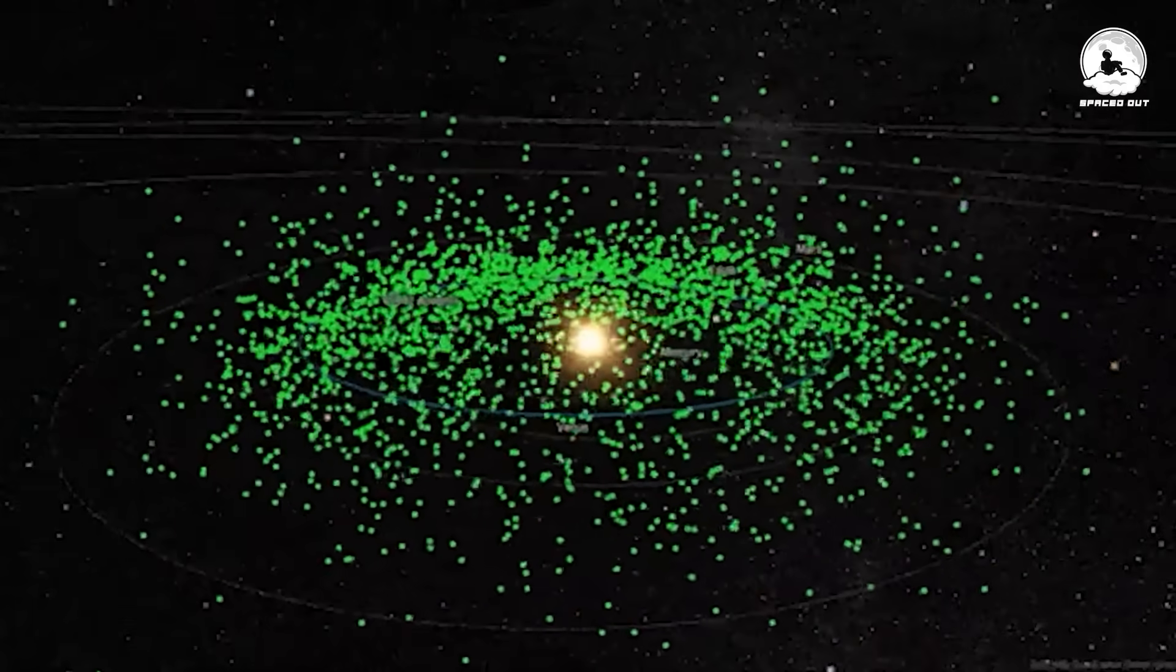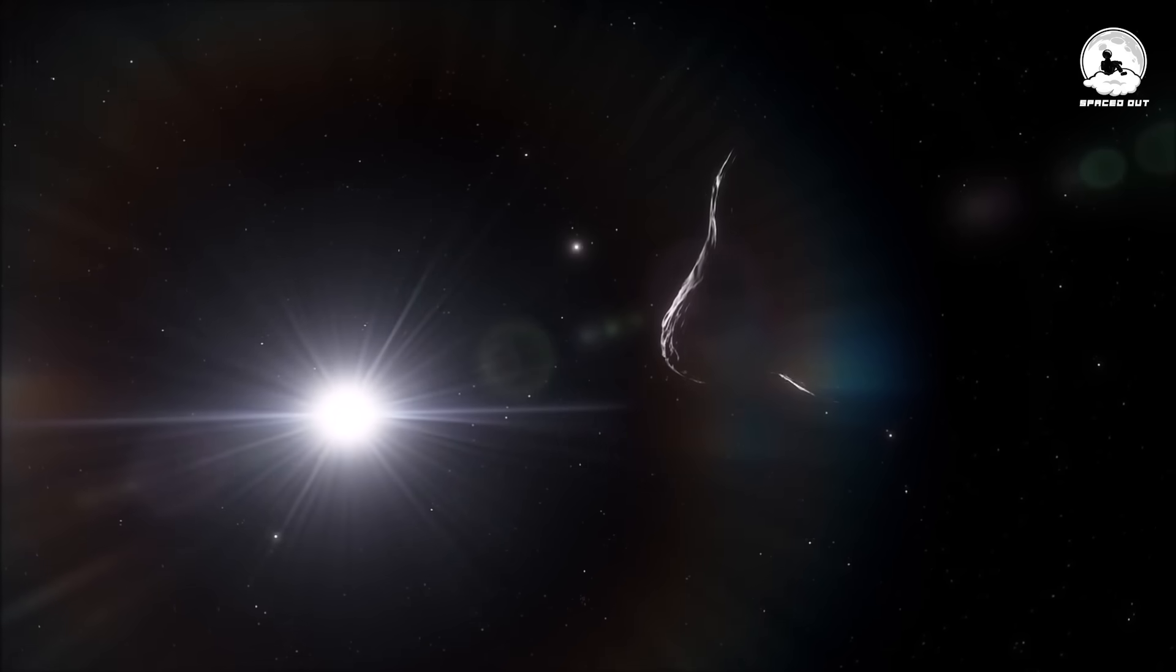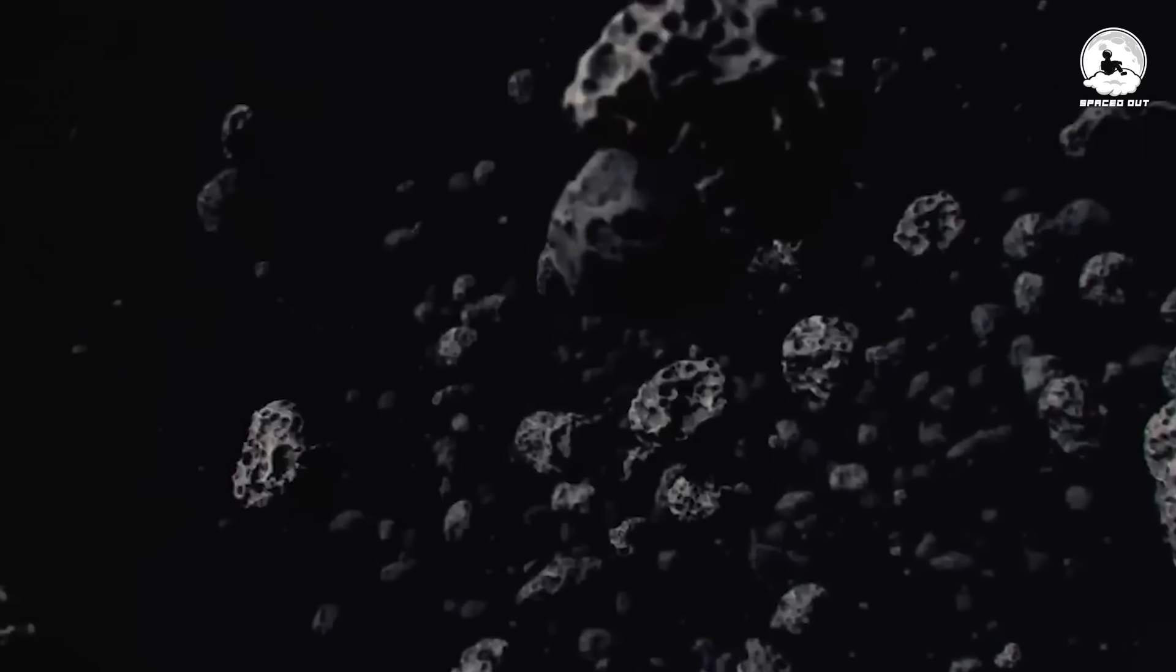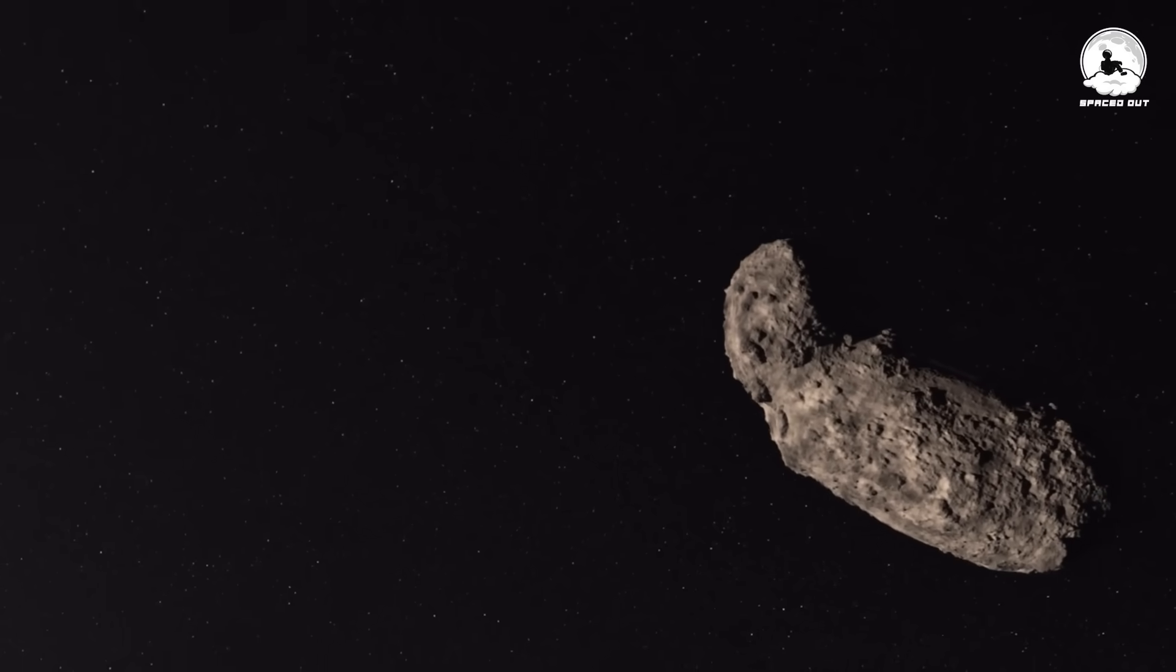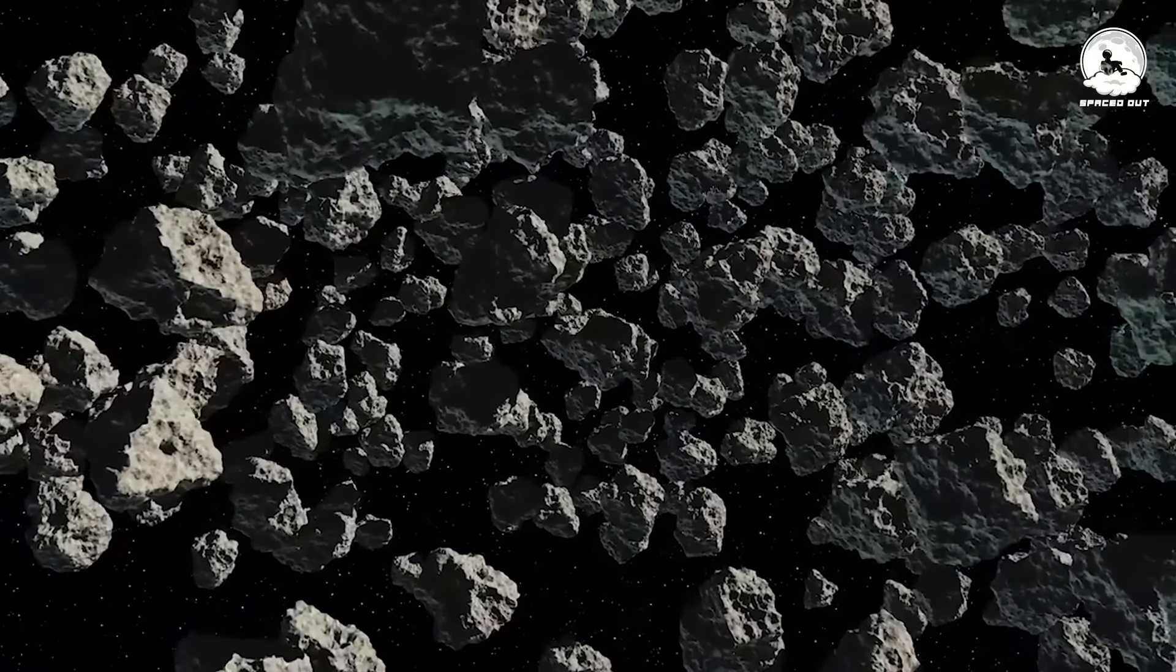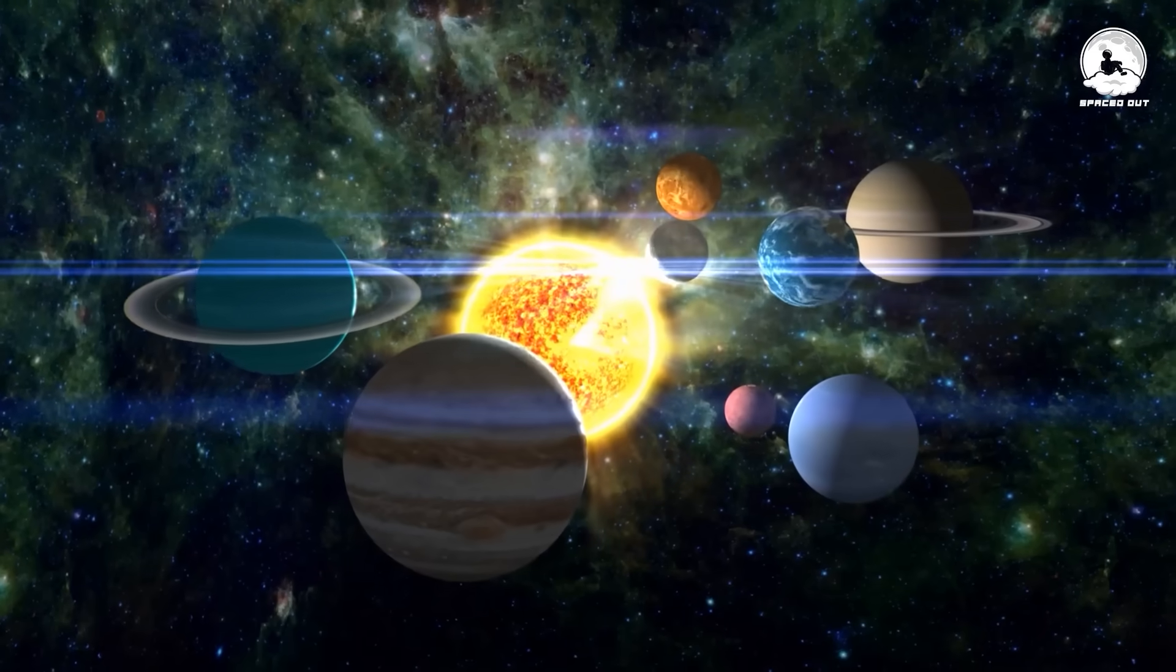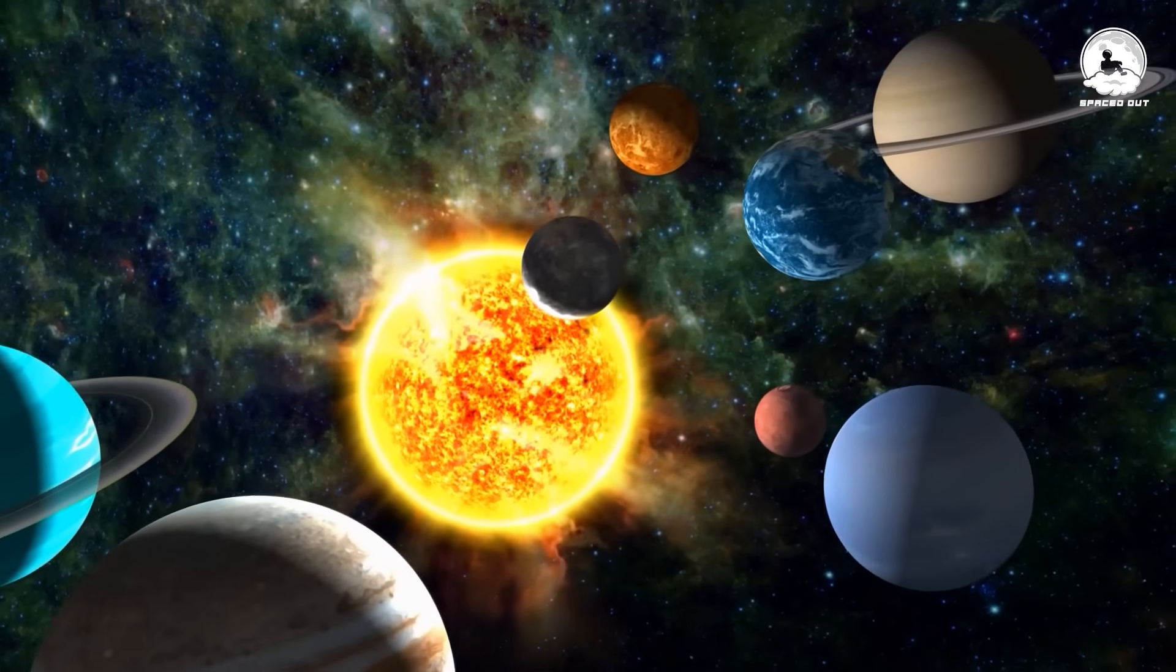So far, over 2000 KBOs have been catalogued. Researchers believe these are only a tiny fraction of the total number of objects scientists think are out there. Astronomers estimate there are hundreds of thousands of objects in the region that are larger than 60 miles or 100 kilometers wide. By carefully measuring the orbits and information about the composition, we can learn where everything in the solar system formed and how it may have been reorganized.